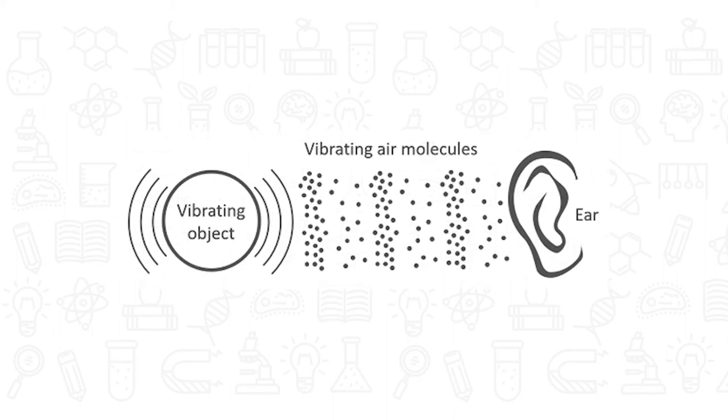These vibrations make the air around an object vibrate. When the air vibrations reach the ear, they shake tiny hairs which are connected with the nerves. These nerves send a message to the brain that noise has been heard.